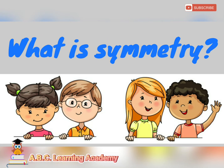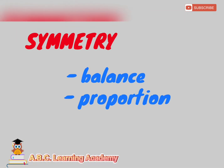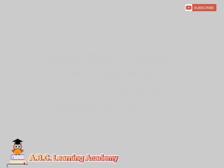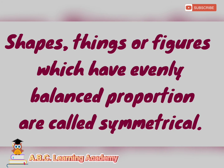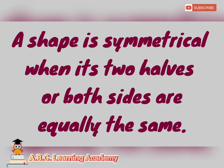What is symmetry? Symmetry means balance, proportion, and equal. Shapes, things, or figures which have evenly balanced proportion are called symmetrical. A shape is symmetrical when its two halves or both sides are equally the same.